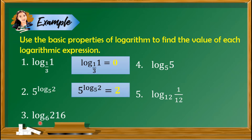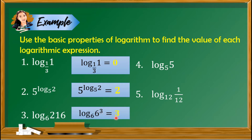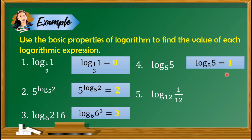Item number 3, we have the logarithm of 216 with base 6. The property that can be applied here is to rewrite 216 having the same base as 6. So 216 can be written as 6 raised to 3, and that exponent gives us the value of this expression — the answer is 3. Next example, logarithm of 5 with base 5: since x and a are the same, the answer is 1.